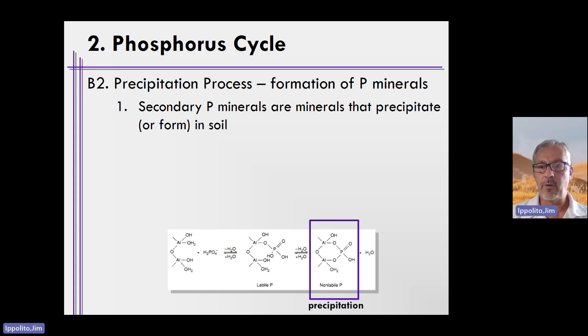In the previous video where we described phosphorus adsorption and desorption, we showed you a graph or set of reactions. As you move from left to right, phosphorus in the form of orthophosphate becomes labile. This is adsorption onto the edge of aluminum hydroxide mineral.